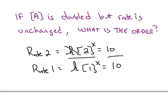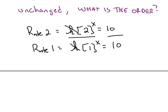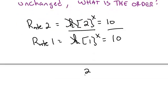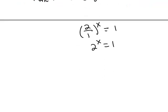Set up the ratio. K cancels with K. 2 over 1 raised to the x power is equal to 10 over 10, which is 1. 2 raised to the x power is equal to 1. x has to be 0. So this is zero order with respect to chemical A. If the concentration does not affect the rate, it's zero order.